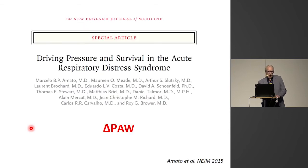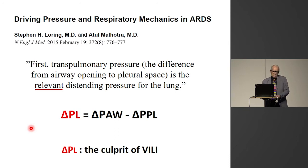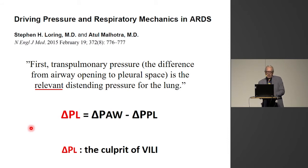Two years ago, an article was published in the New England Journal of Medicine saying that the airway driving pressure is the most fundamental determinant of survival in acute respiratory distress syndrome. However, an accompanying editorial pointed out that this was not really true, because the airway driving pressure is the sum of the lung driving pressure and the pressure needed to displace the chest wall. The relevant pressure is the transpulmonary driving pressure — the pressure that hits the lung — and that is the culprit of ventilator-induced lung injury.